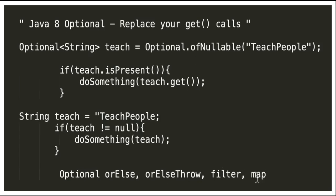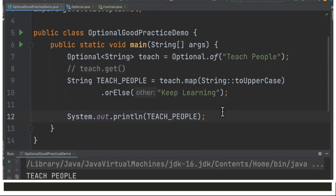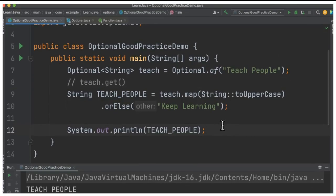We can use the other methods — for example, orElse, orElseThrow, filter, and map. It's a good practice to use map rather than the get method. Let's see an example.